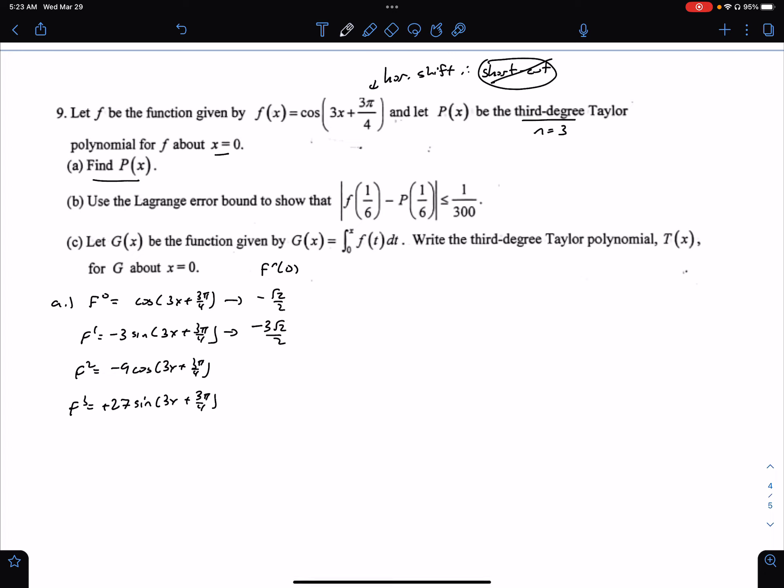Here we're going to get negative √2/2. Here we're going to get negative 9√2/2. And plug in 27, we get 27√2/2.